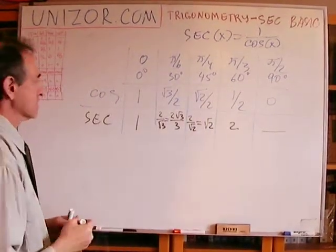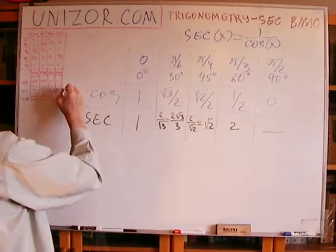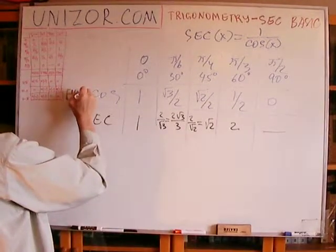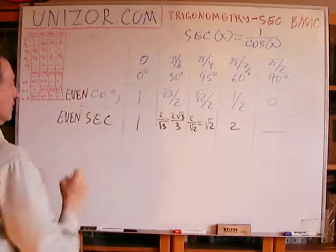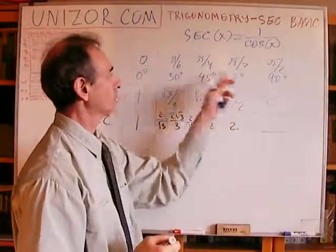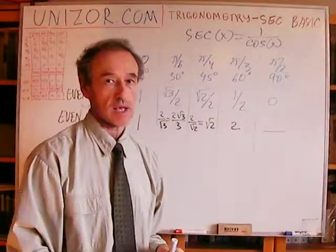Now, cosine is an even function. That makes secant an even function. If it's even function, the value of negative angles is exactly the same as positive.